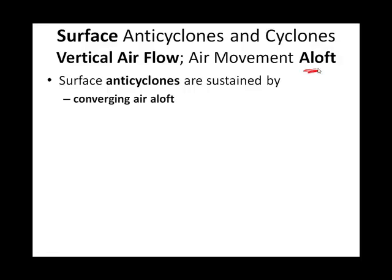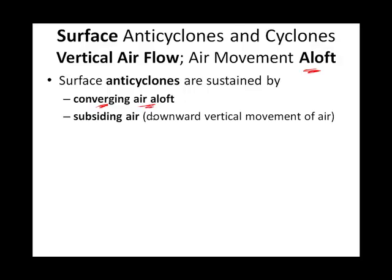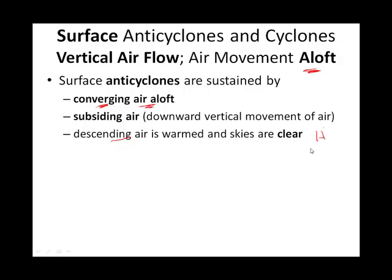Our central high pressure is sustained by converging air at upper elevations in the troposphere. What happens is that converging air moves downwards — it descends where there's a high pressure, and it keeps that anticyclone alive.